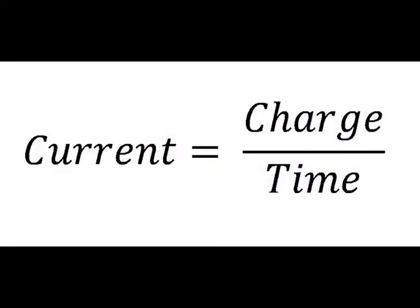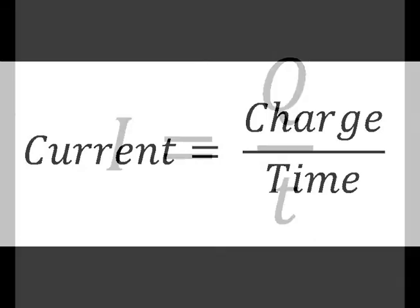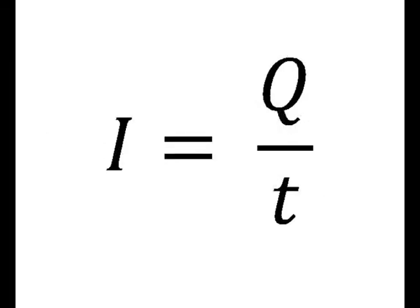I can write that as a formula where the current is equal to the amount of charge passing a point in the circuit divided by the time taken. The current is measured in amps, the charge is measured in coulombs, and the time is measured in seconds. Using symbols: I represents current, Q represents charge, and T represents time.